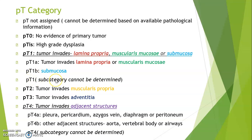PT1 is assigned when the subcategory cannot be determined. PT2 is when the tumor invades the muscularis propria. PT3 is when tumor invades the adventitia. PT4 is when tumor invades adjacent structures, further divided into T4A and T4B. When adjacent structures include pleura, pericardium, azygous vein, diaphragm, or peritoneum, it is T4A. When aorta, vertebral body, or airways are involved, it is PT4B.